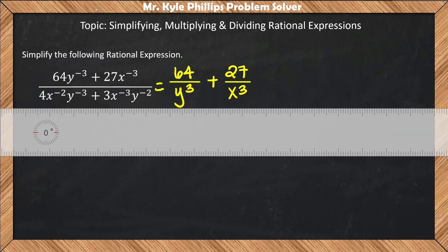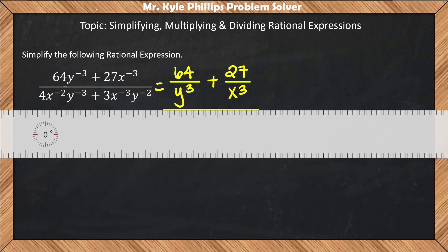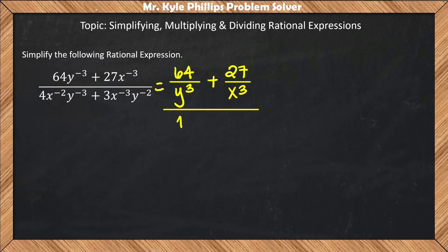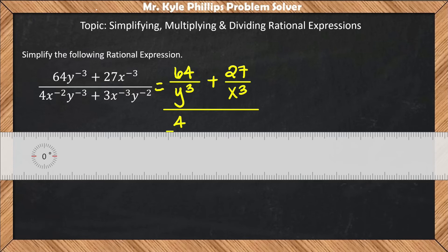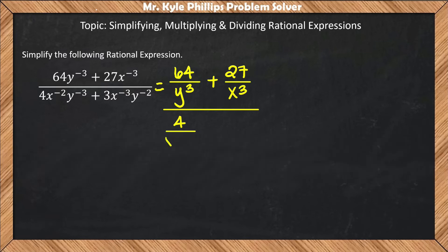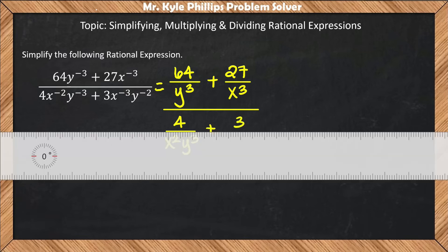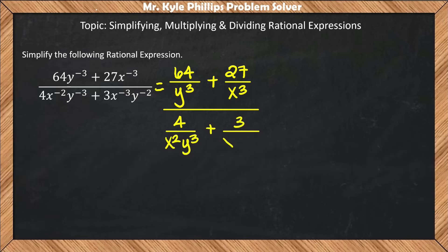...all over 4/(x²y³) + 3/(x³y²). Now I've gotten rid of all my negative exponents.